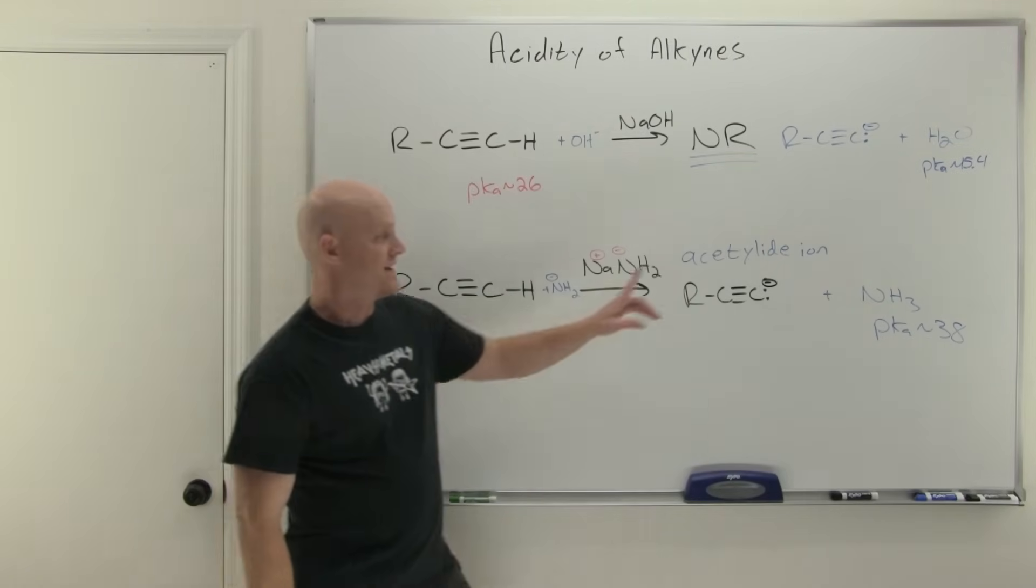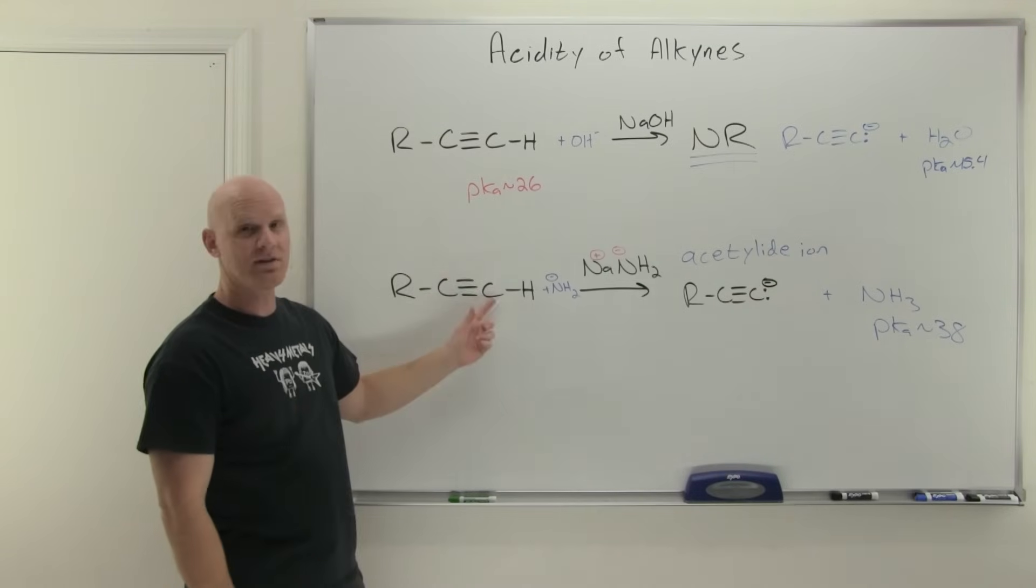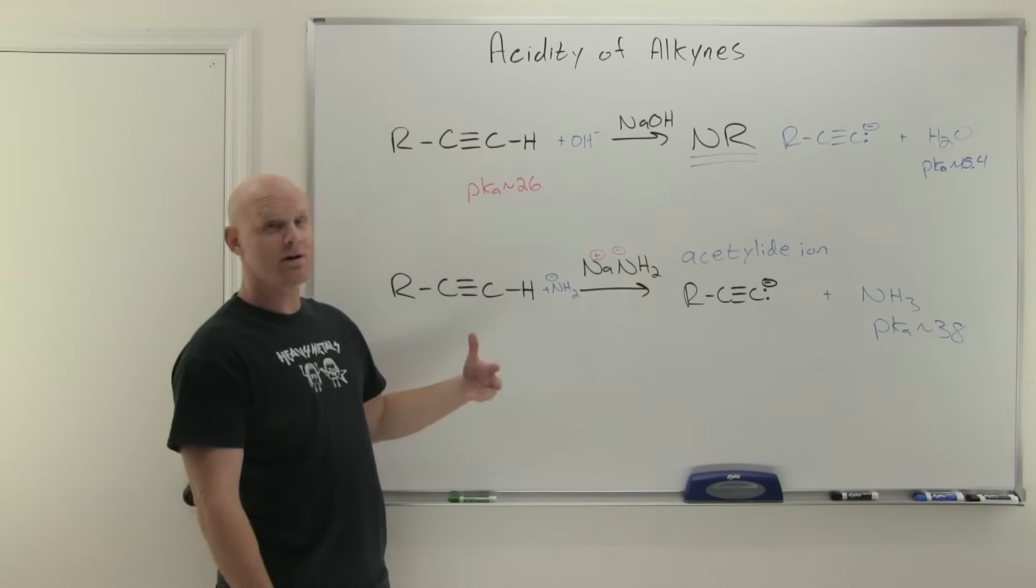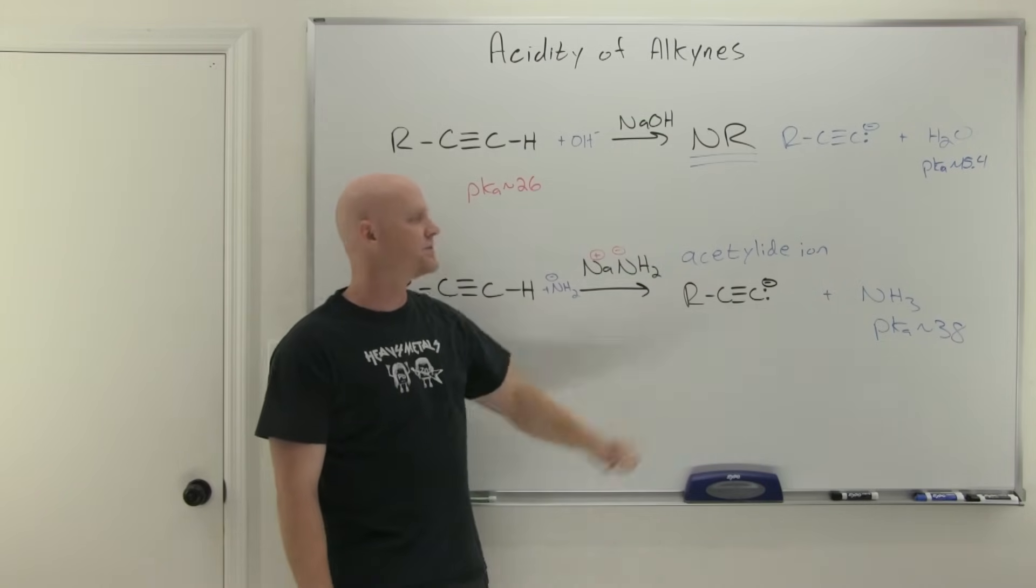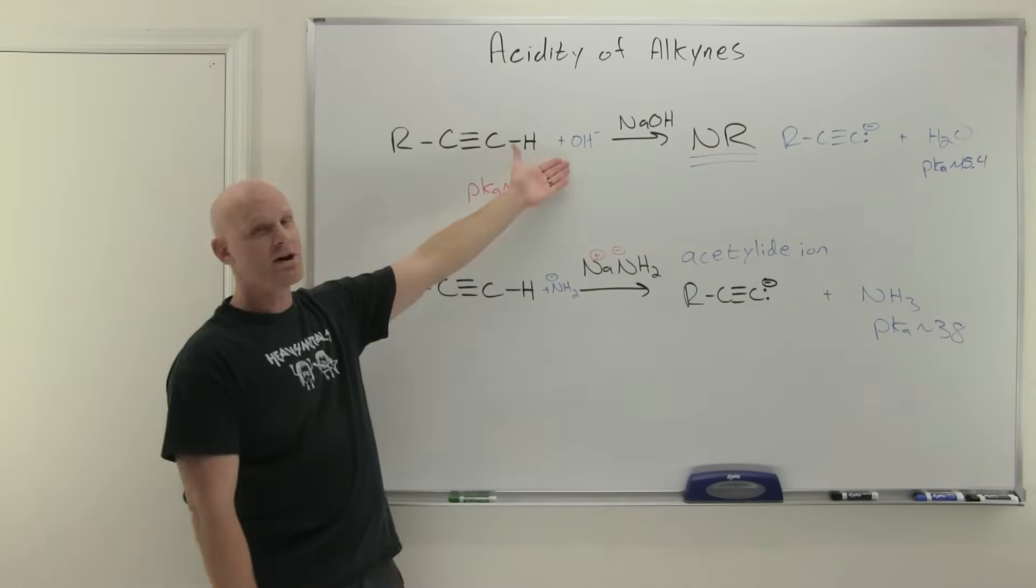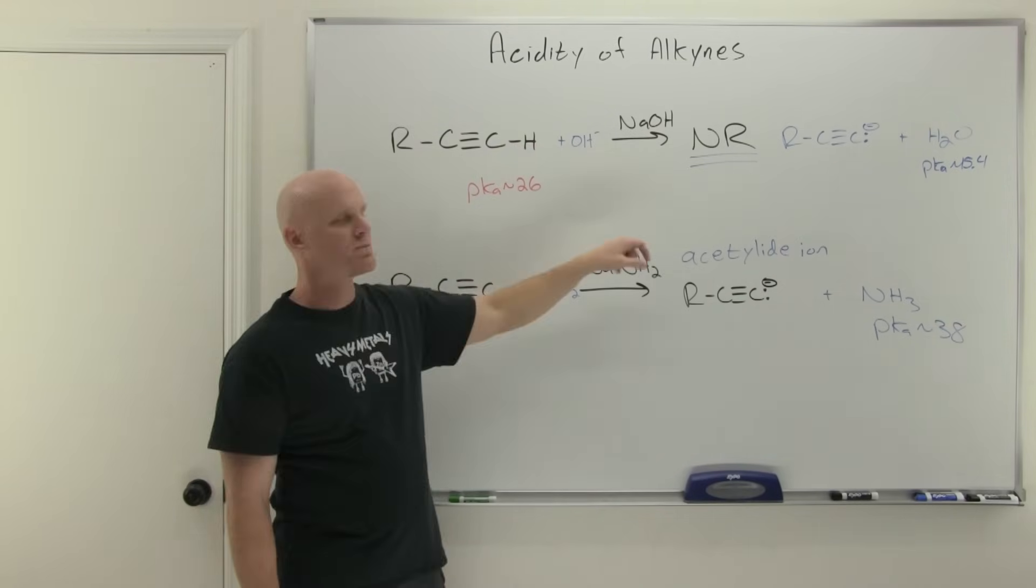And so now all of a sudden he's the weaker acid as compared to the terminal alkyne with a pKa of 26. And he's much higher pKa by a fair amount. And so the equilibrium is going to lie so far to the right that it effectively happens virtually 100%. So again if you use sodium hydroxide it's not going to cut it. If you use sodium amide virtual 100% to completion.